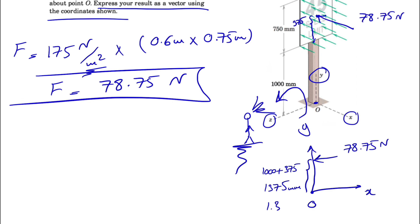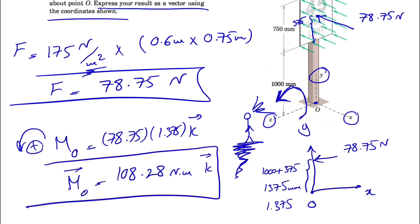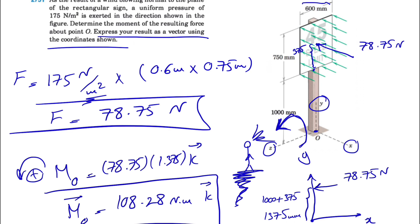Finding the moment, we're going to call counterclockwise positive. As we can see, if we look at this from this side, the moment will be in this direction, which is counterclockwise. So the moment is in the z direction. For the moment we have force times the distance, which was 1.375, which will be 108.28 Newton meters, and the direction would be k. That's how we're going to report the moment in vector form.